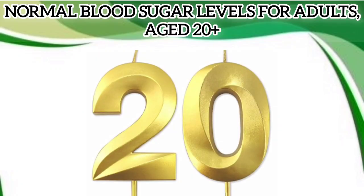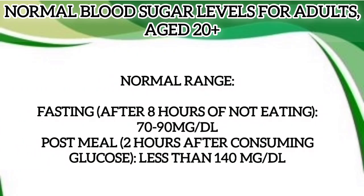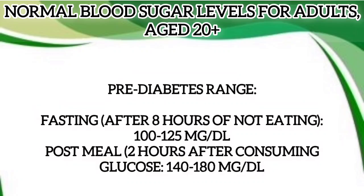Normal blood sugar levels for adults aged 20+. Normal range: fasting after 8 hours of not eating, 70-90 mg/dL; post-meal 2 hours after consuming glucose, less than 140 mg/dL. Pre-diabetes range: fasting after 8 hours of not eating, 100-125 mg/dL; post-meal 2 hours after consuming glucose, 140-180 mg/dL.